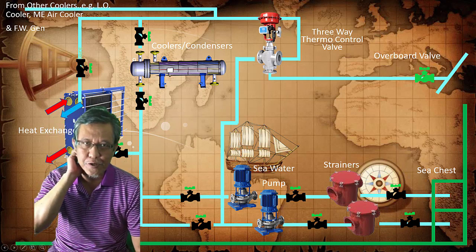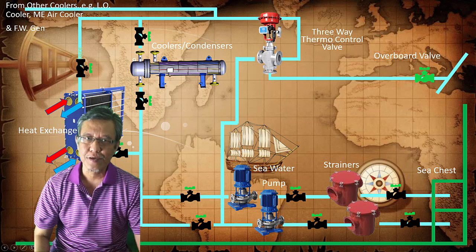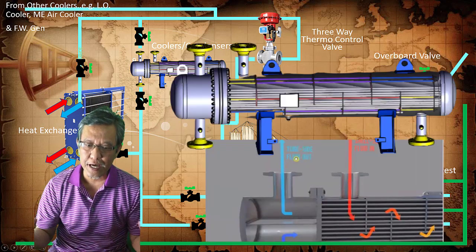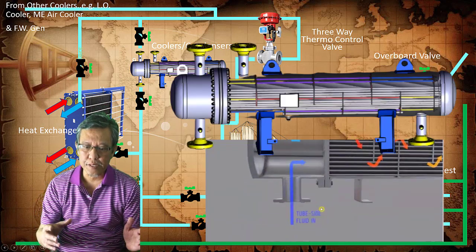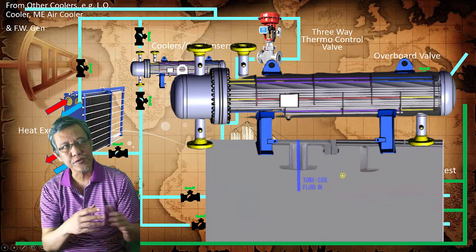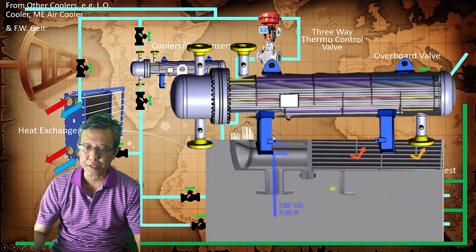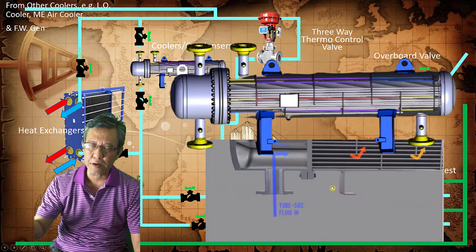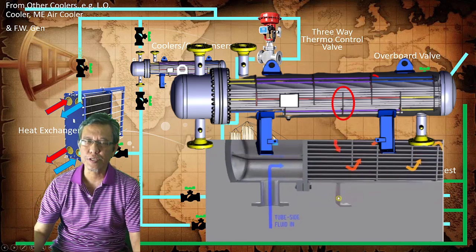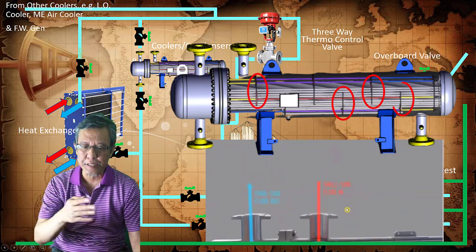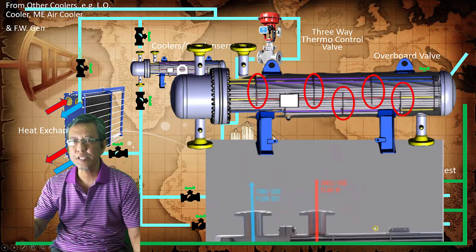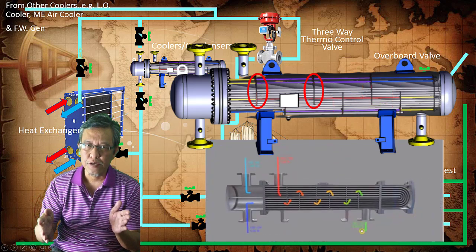The same thing with tube type exchangers. These exchangers could be multipass, as you can see the design, it's a multipass system. You can see the chambers here, they are subdivided inside and within the shell.